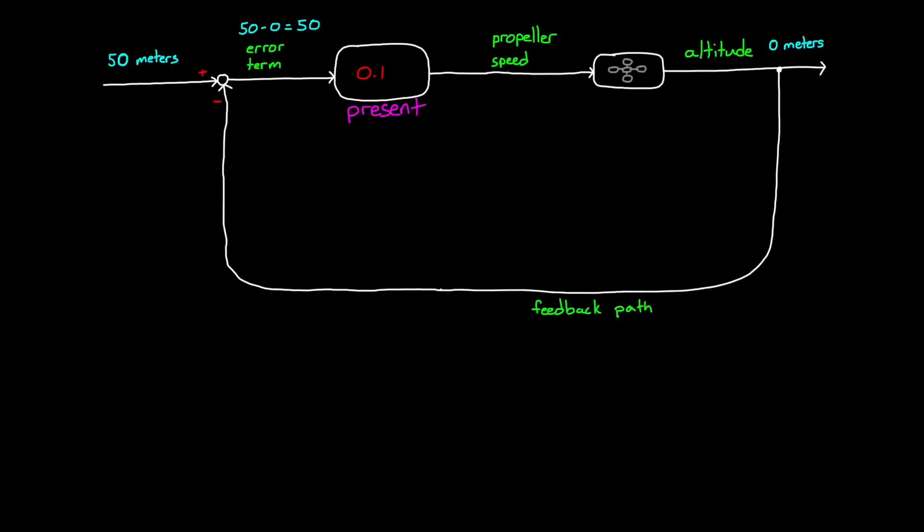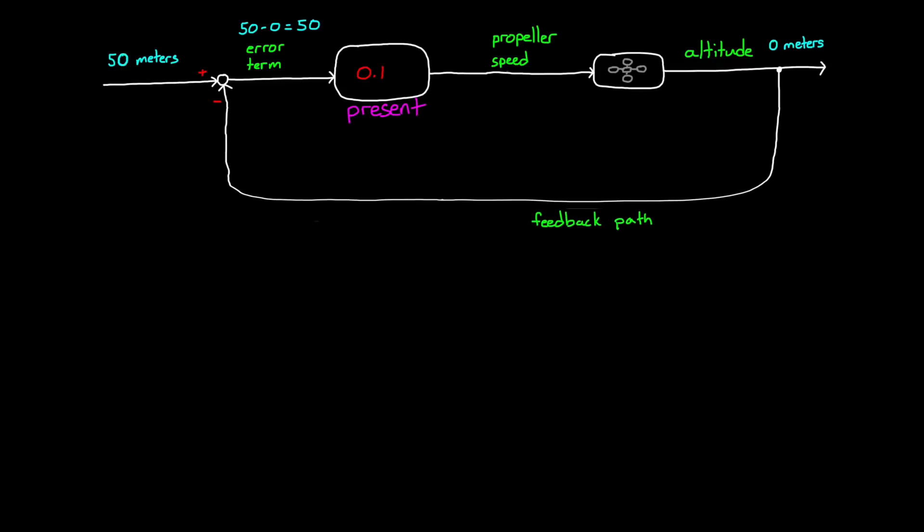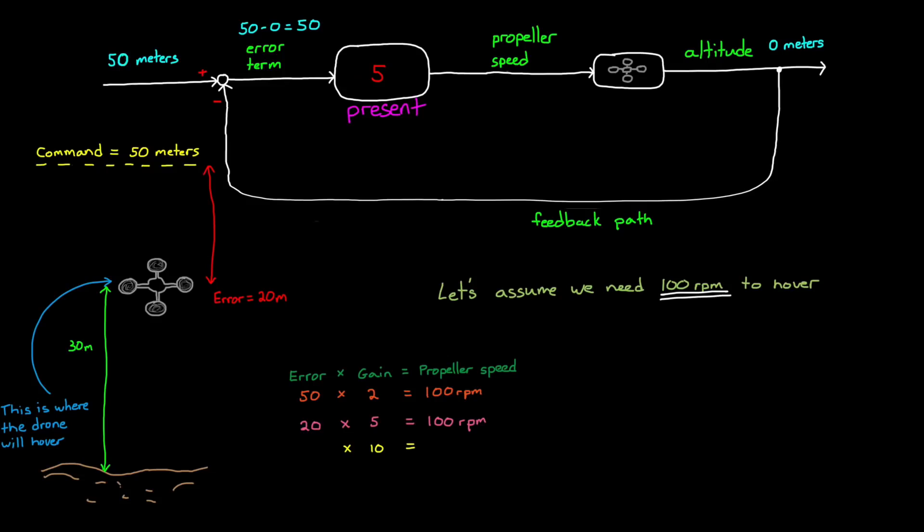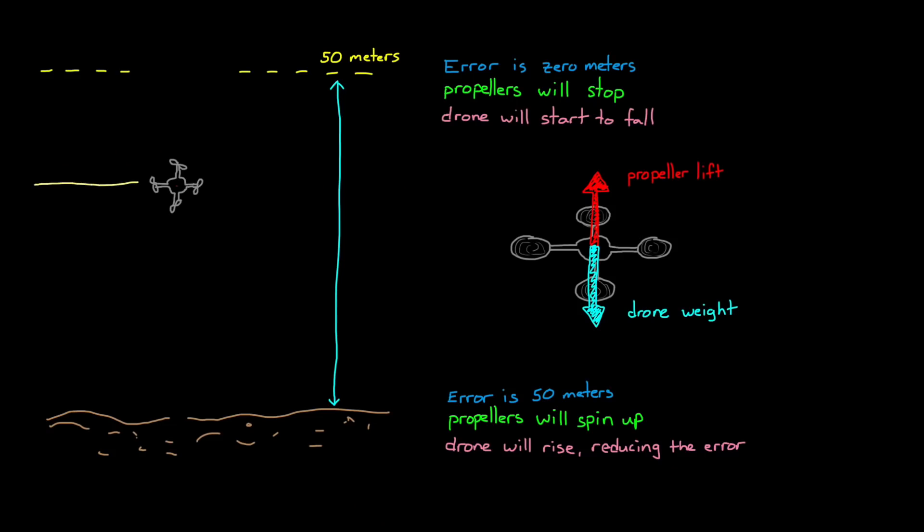So where would our proportional controller hover this drone? Well, that depends on the controller gain. Now let's assume for the moment that the propellers need to spin at 100 RPM in order for the drone to hover. If our proportional gain was 2, then the drone would hover right at ground level, since an error of 50 times 2 is 100 RPM. However, if we increased the gain to 5, the drone would rise at first, but then stop at 30 meters. A gain of 10 would produce an error of 10 meters, and a gain of 100 would produce an error of 1 meter. And no matter how high we increase the gain, the error won't go away. So we can see that a simple proportional controller doesn't work in every situation. It works with our walking example, but for our drone it created this constant error. This error is also called steady state error.